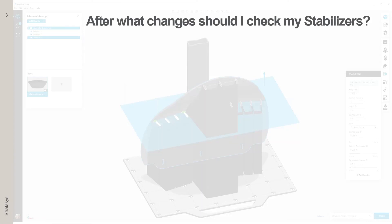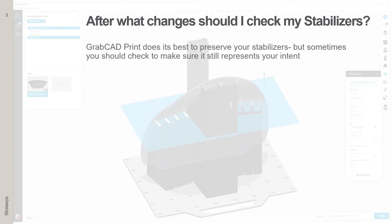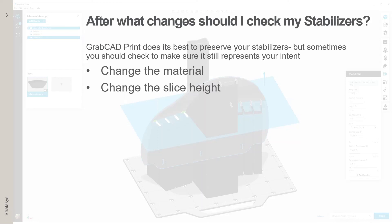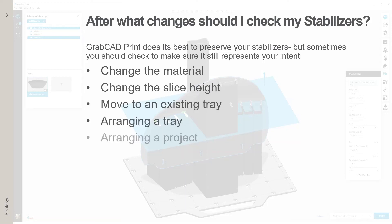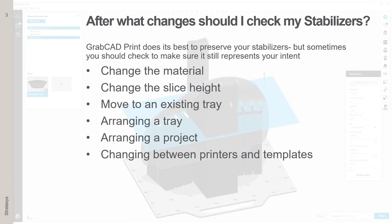After what changes should you check your stabilizers? GrabCAD Print does its best to preserve your stabilizers, but sometimes you should check to make sure they still represent your intent. Check your stabilizers when you change your material, change your slice height, move your model to an existing tray, arrange a tray, arrange a project, and when you change between printers and templates.